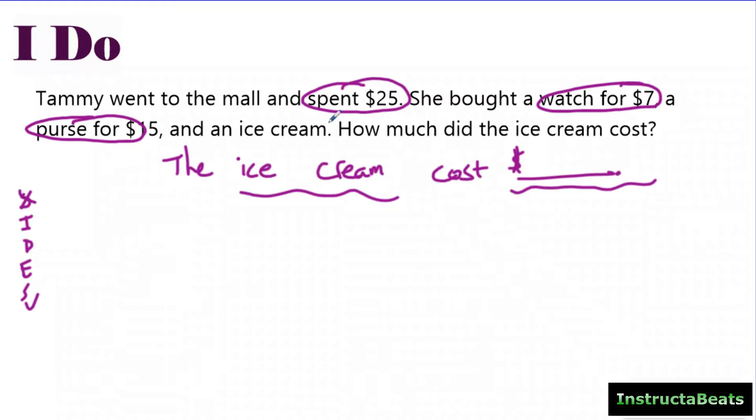So I'm going to draw a part-whole model here. She spent $25, so here's my $25. She bought a watch for $7. Here we go, make my watch $7. She bought a purse for $5, so the five needs to be a little bit smaller than the seven. I'll label that as purse.